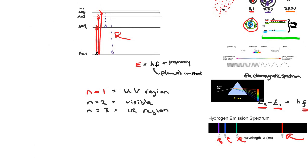When an electron falls back down to n equal to 1, that electron transition is usually picked up in the UV region. When it falls down to n equal to 2, that is picked up in the visible spectrum — that is the atomic emission spectra that we see. When it falls back down to n equal to 3, that energy transition corresponds to the infrared region, meaning that frequency is found in the IR region of the electromagnetic spectrum.